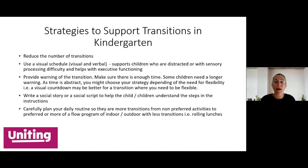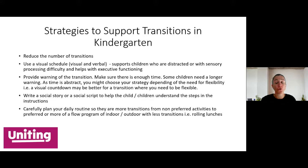As time is abstract, choose your strategy depending on the need for flexibility. A visual countdown — five, four, three, two, one — may be better for transitions where you need flexibility, so you can choose when to remove each number if you need a bit more time. You could write a social story or social script to help children understand the steps in instructions. Careful planning of your daily routine — having more transitions from non-preferred to preferred activities rather than away from preferred — creates a better flow, such as an indoor-outdoor program.